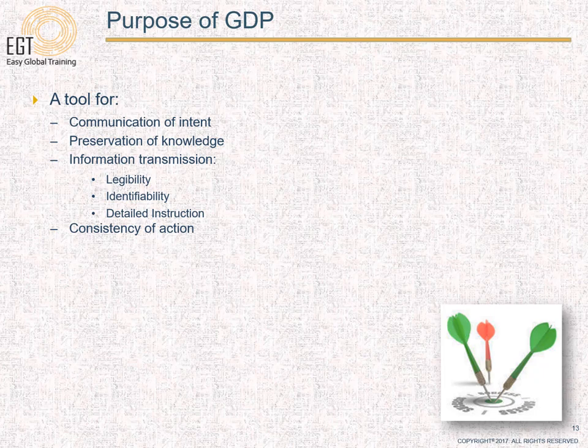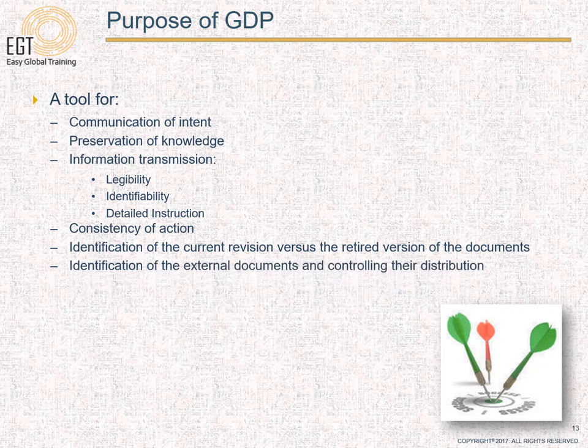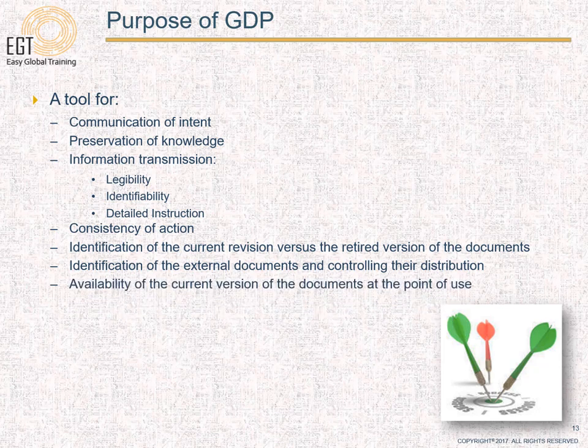These regulations apply to all steps documents go through — from drafting, review, approval, and update — bringing about a good level of consistency of action. GDP ensures identification of the current revision versus the retired version of documents and prevents unintended use of obsolete or archived documents. It also ensures there is a process to identify external documents and control their distribution, and ensures availability of the current version at the point of use to minimize errors and non-compliance.